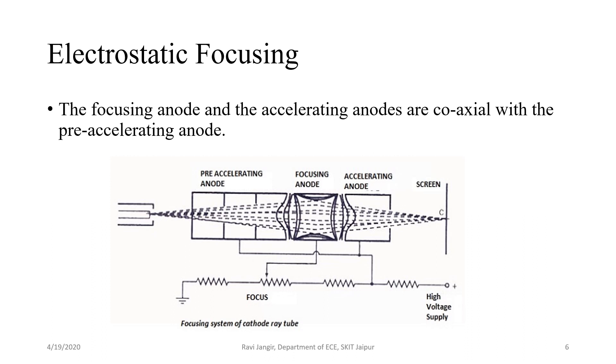The figure shows electrostatic focusing arrangement for CRO. As we can see that the electron beam which is coming out of control grid is a bit scattered. Now to focus this beam to the center of the screen, we need a focusing arrangement. In this focusing arrangement, we use three anodes that is pre-accelerating anode, focusing anode and accelerating anodes. The focusing anode and accelerating anodes are coaxial with the pre-accelerating anode.